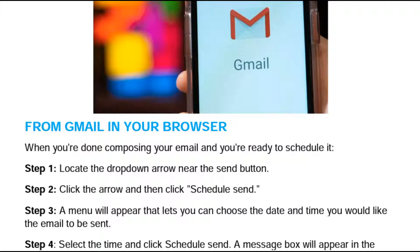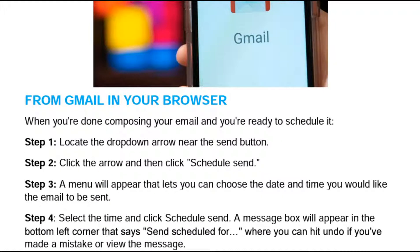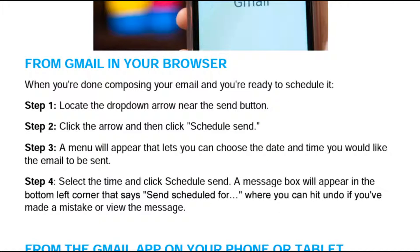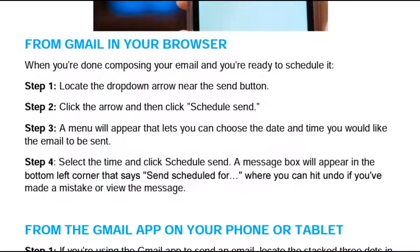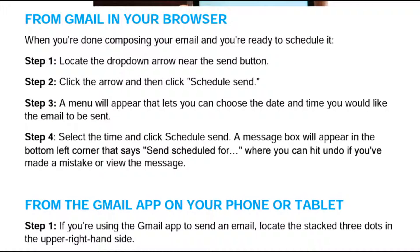When you are done composing your email and you are ready to schedule it, number one, locate the drop-down arrow near the send button. Then click the arrow and click 'Schedule Send'. A menu will appear that lets you choose the date and time you would like the email to be sent.